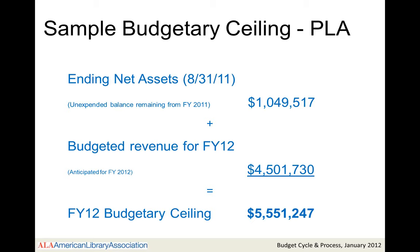In this example, let's assume the Public Library Association, or PLA, ends the year with a net asset balance of $1.1 million. During budget development, they expect to generate revenue in fiscal year 2012 of $4.5 million. Taken together, $5.6 million is the budgetary ceiling and will represent the maximum amount that PLA will be authorized to spend during fiscal year 2012.